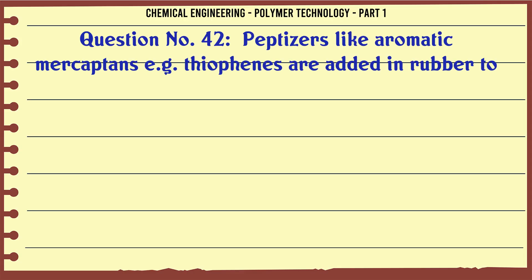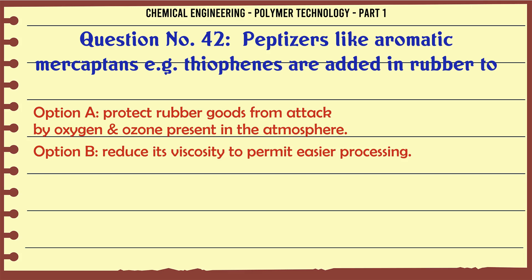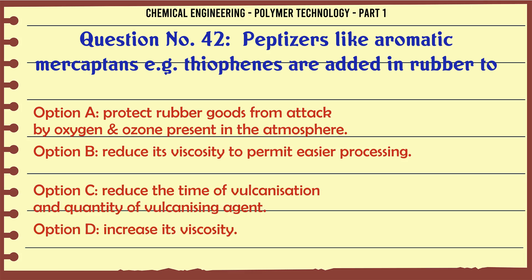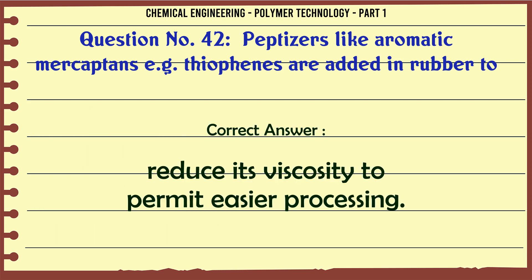Peptizers like aromatic mercaptans (e.g., thiophenes) are added to rubber to: A. Protect rubber goods from attack by oxygen and ozone, B. Reduce its viscosity to permit easier processing, C. Reduce the time of vulcanization and quantity of vulcanizing agent, D. Increase its viscosity. The correct answer is reduce its viscosity to permit easier processing.